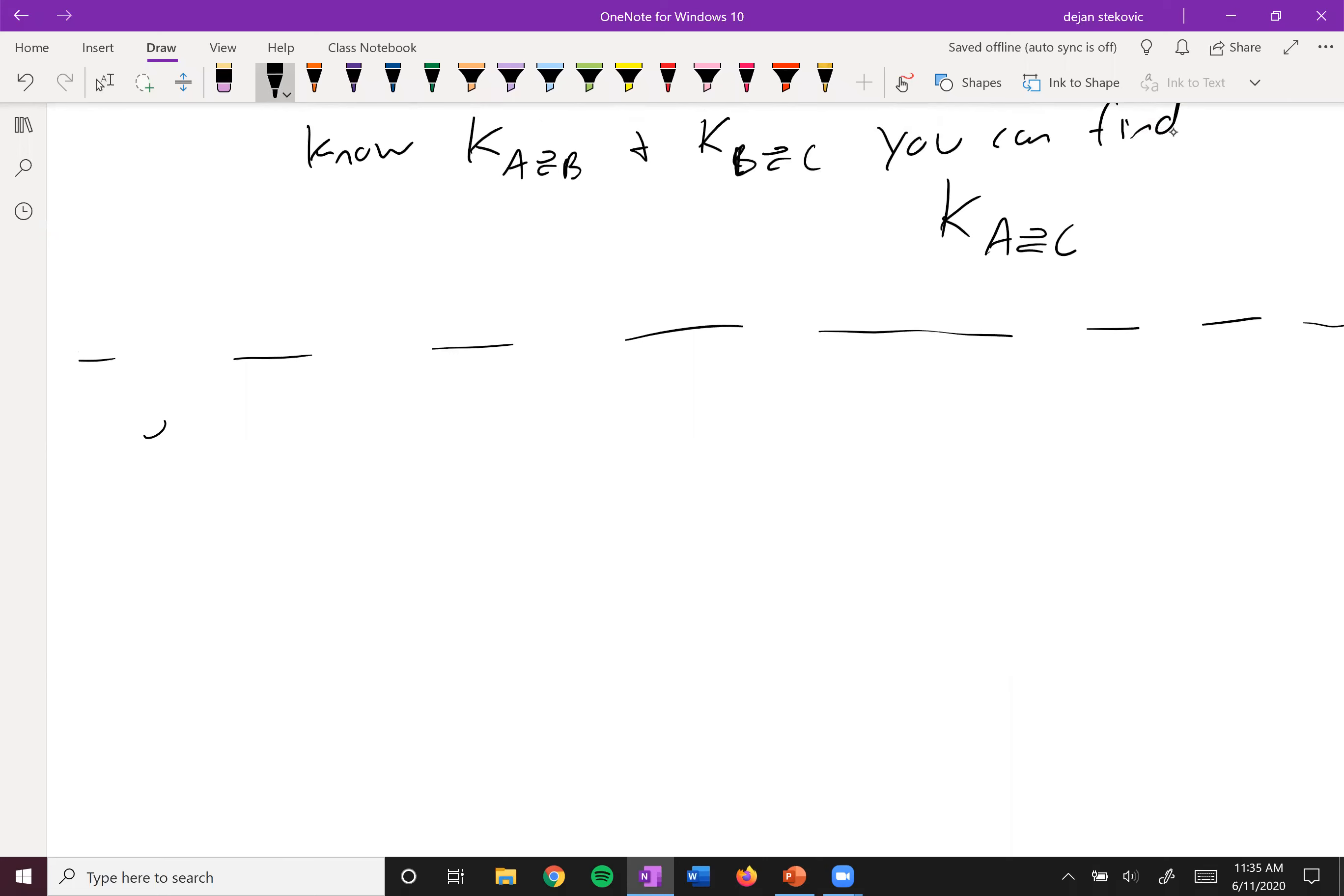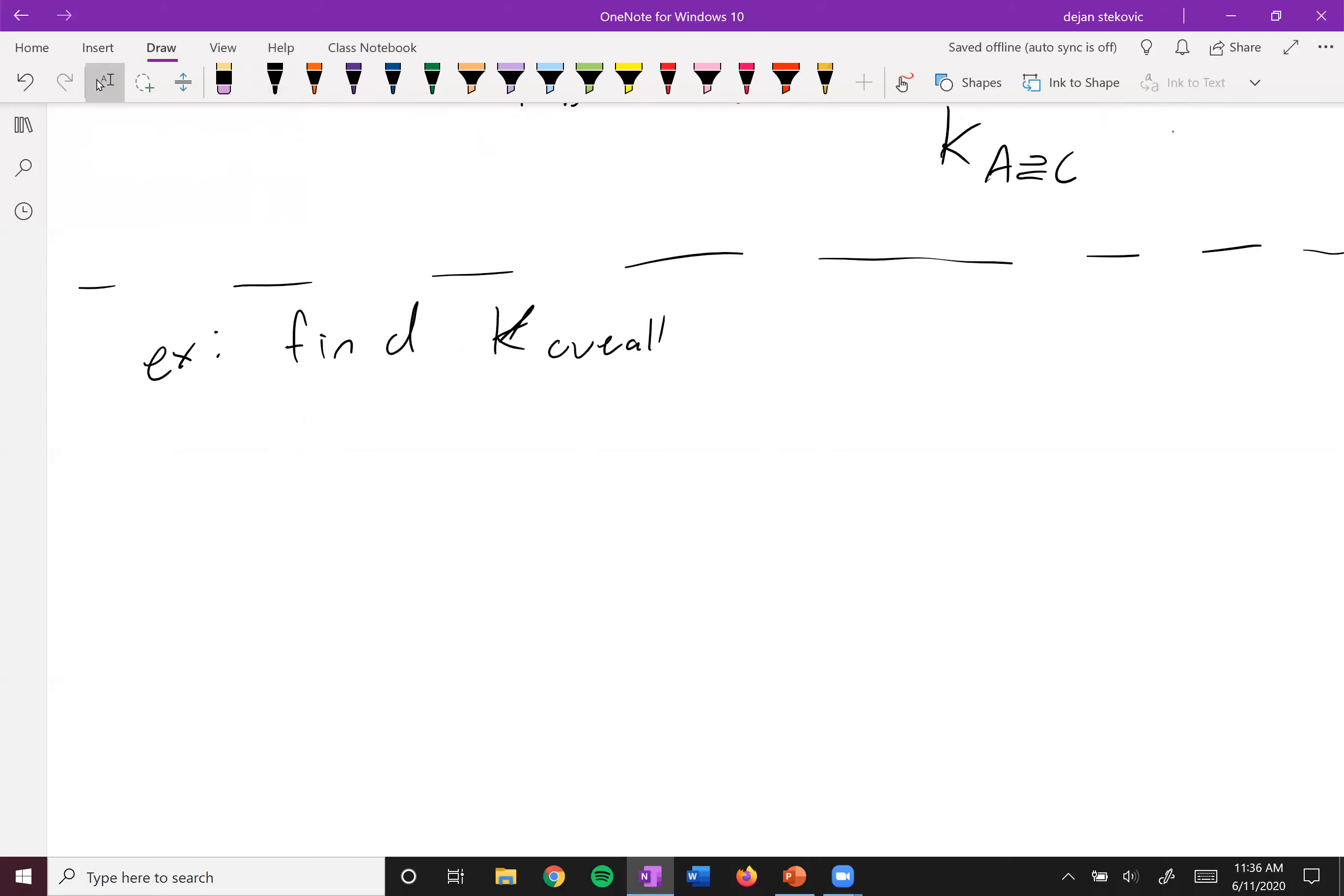So for example, in this example, what we want to do is find K overall, the overall reaction. And so here's our overall reaction. We have 2NH3 plus 3I2 going to N2 plus 6HI. And then our K overall here, this is our K overall. And we don't know this value. This is what we're going to want to find at the end. So we'll leave that as a question mark.